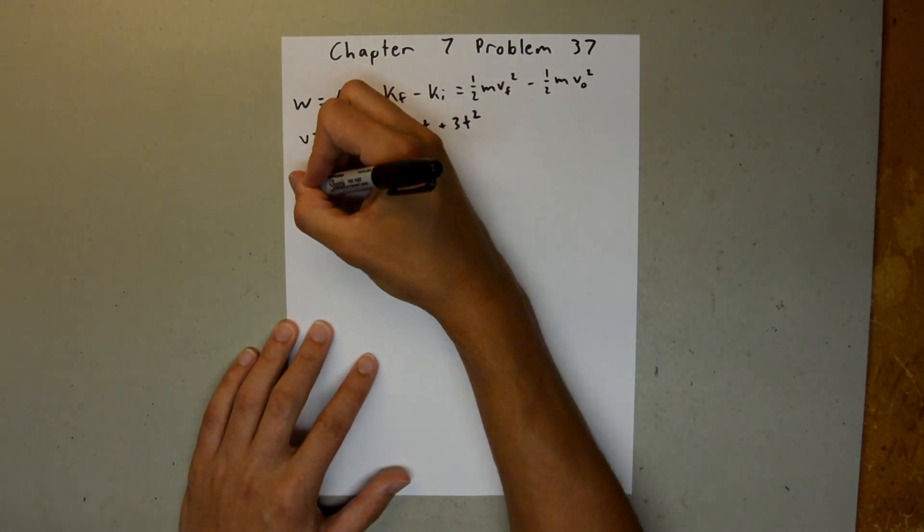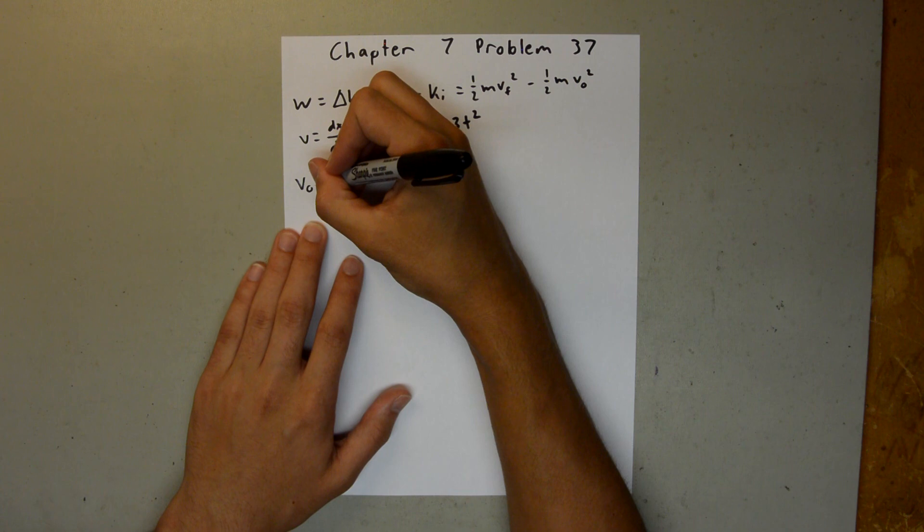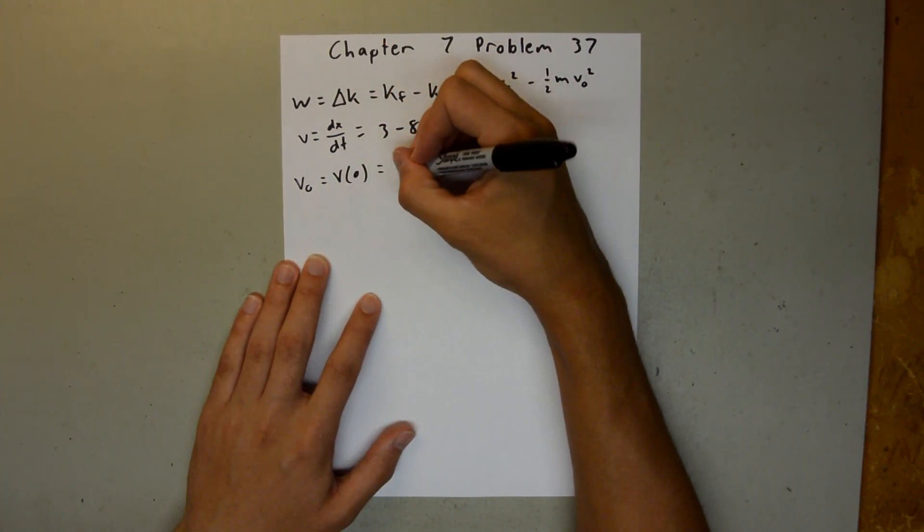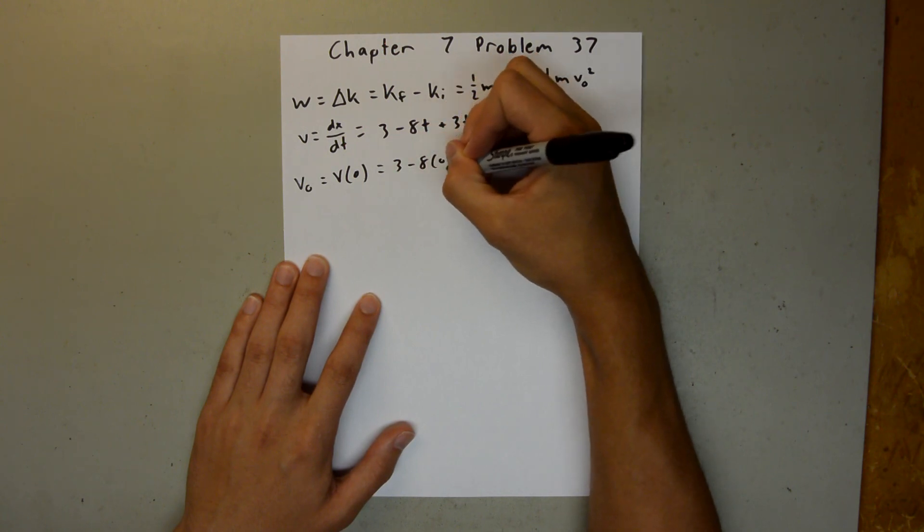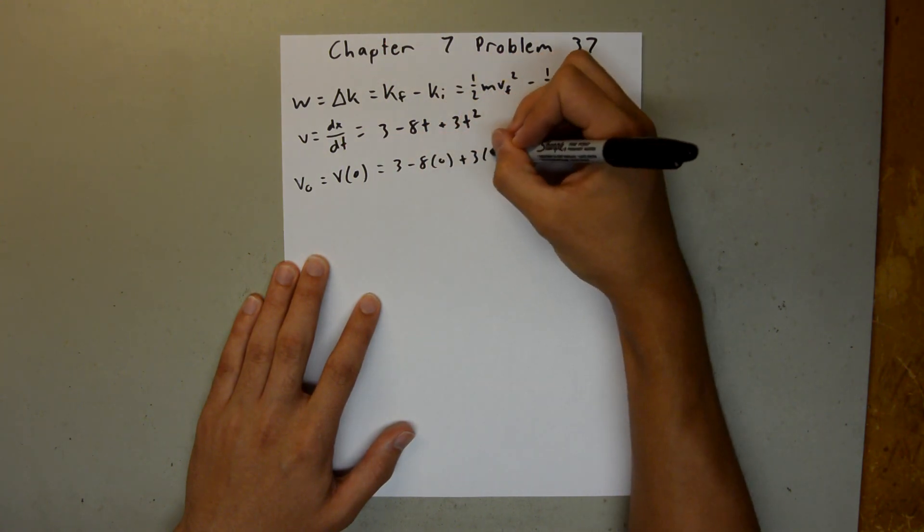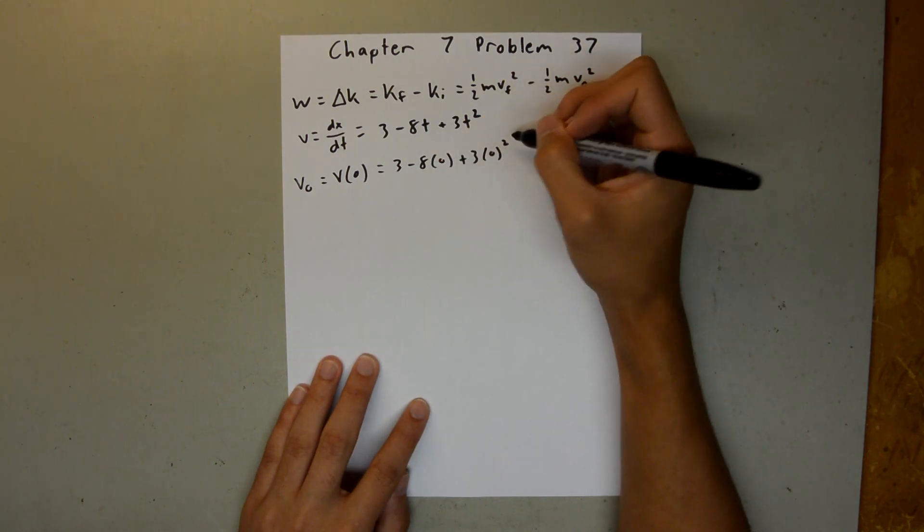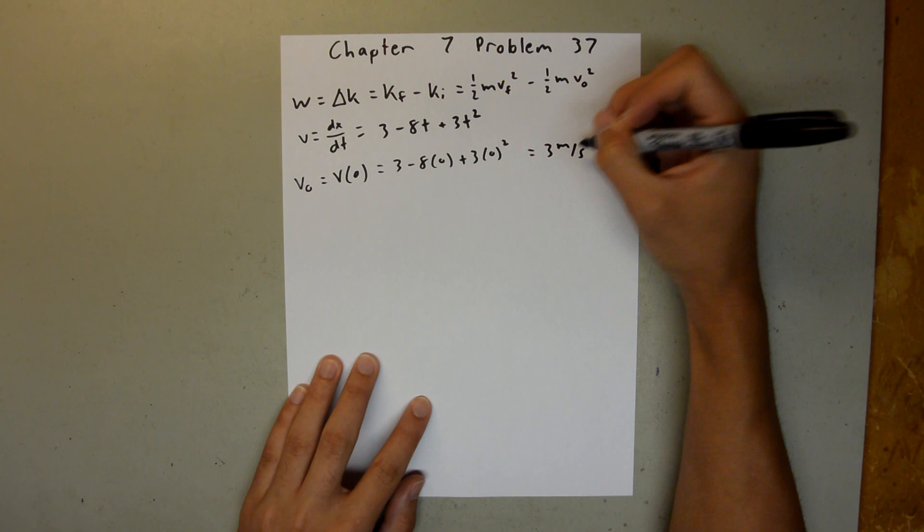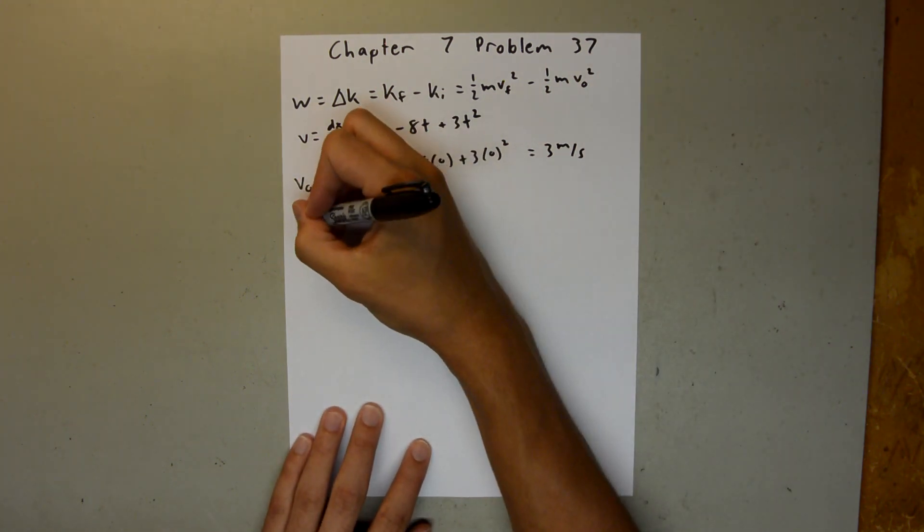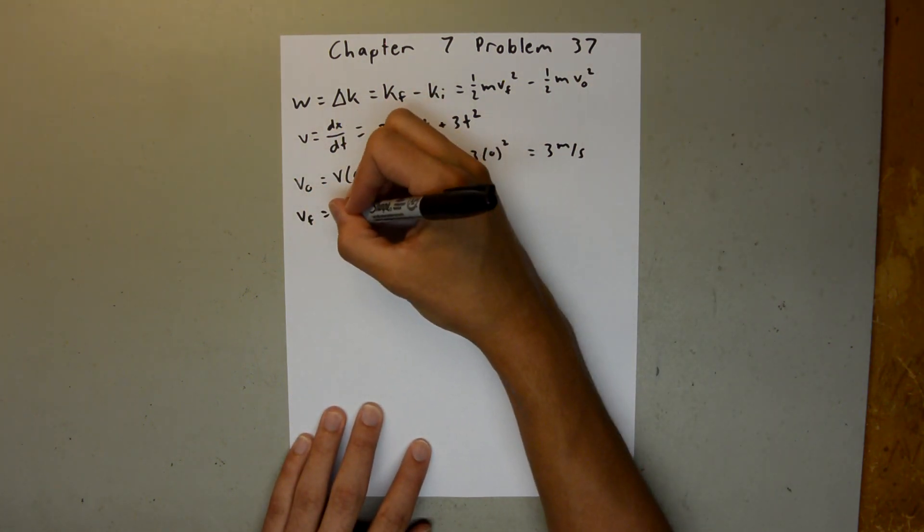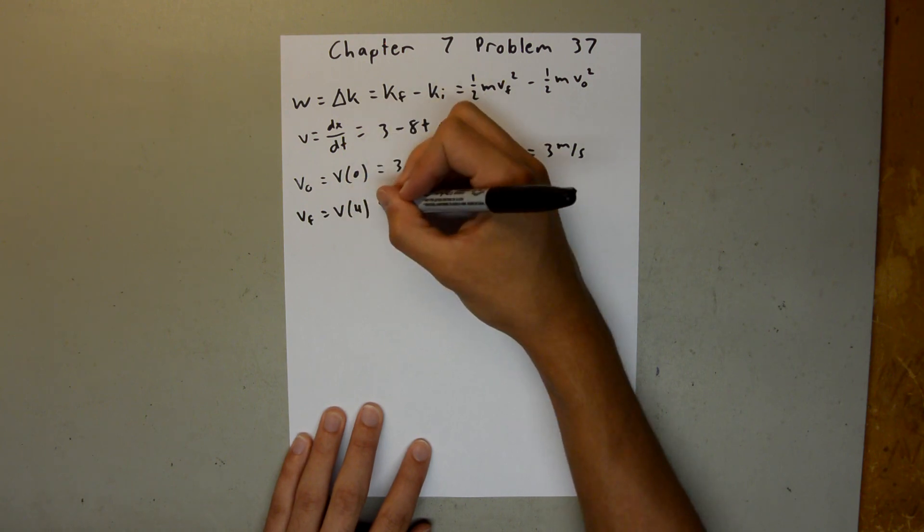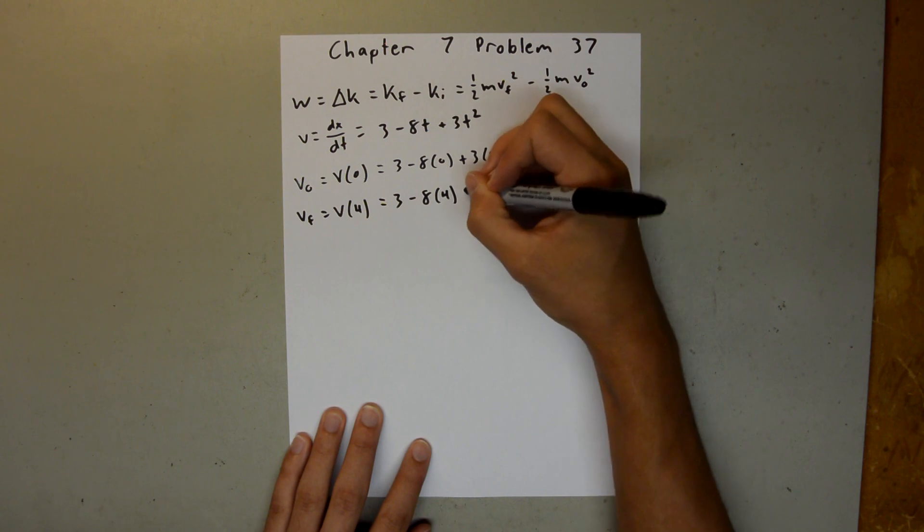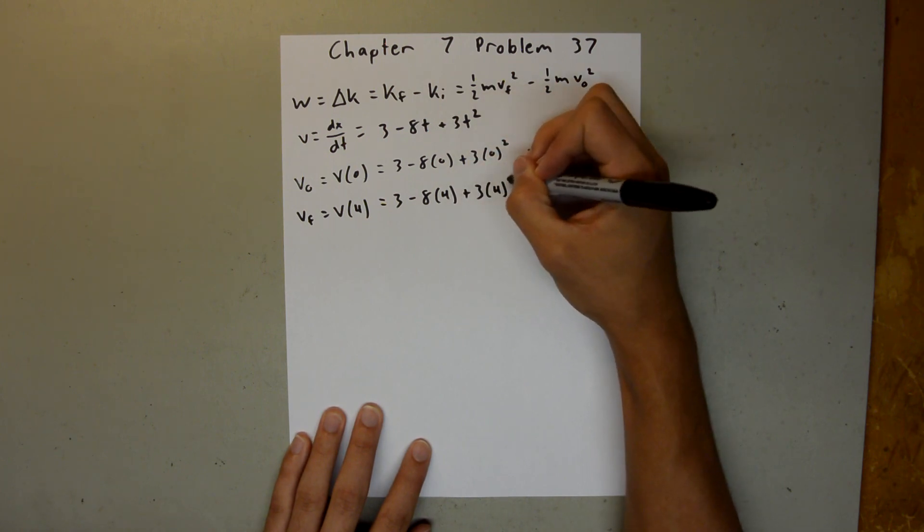So our initial velocity is equal to the velocity at time t equals 0, and that's going to be equal to 3 minus 8 times 0 plus 3 times 0 squared. And our final velocity, which is equal to our velocity at t equals 4, is equal to 3 minus 8 times 4 plus 3 times 4 squared.